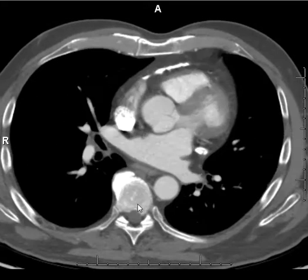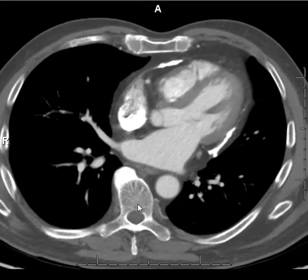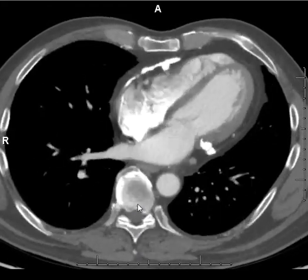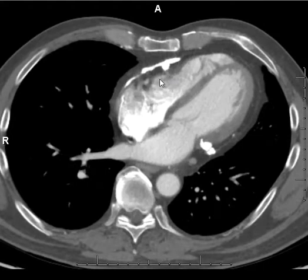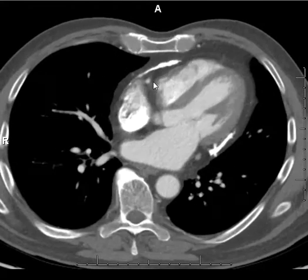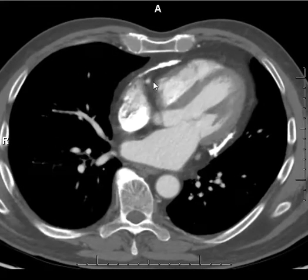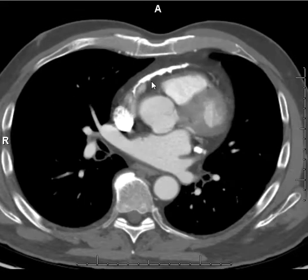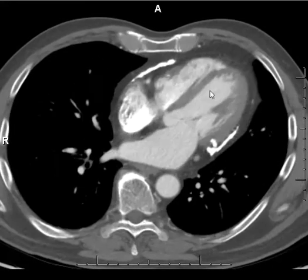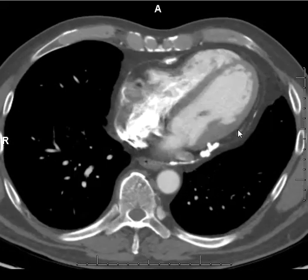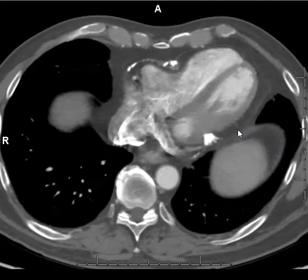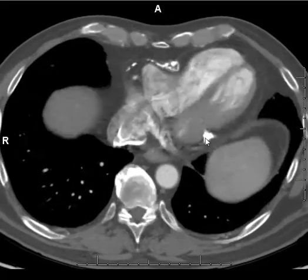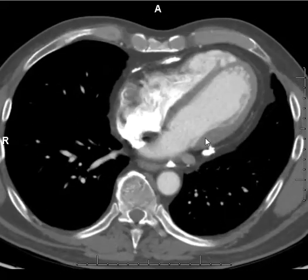This is a CT scan of a 59-year-old patient. What you can see here is calcification of the pericardium, and that is usually seen in constrictive pericarditis.